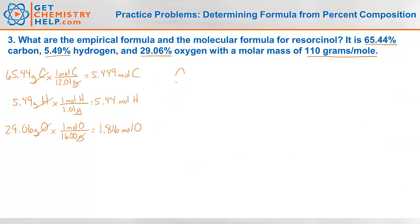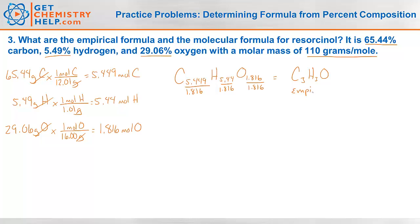We write our pseudo-formula: C(5.449), H(5.440), O(1.816). Dividing them all by the smallest, which is 1.816, gives me C(3), H(3), O(1). So the empirical formula is C₃H₃O — the smallest whole number ratio.